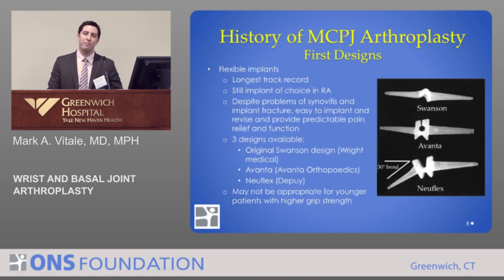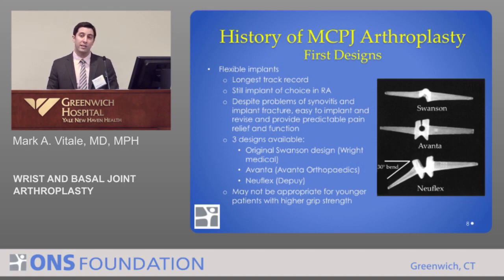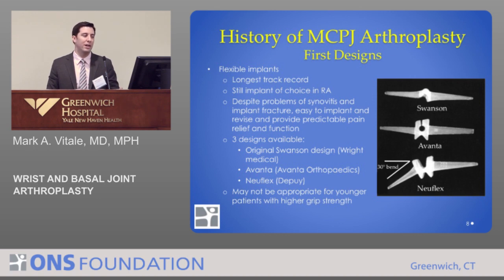Today, there are three main silicone implant designs: the Swanson design, which has been around the longest, the Avanta design, and the Nuflex design, all with different benefits and drawbacks. The Swanson design is still a good option in patients with rheumatoid arthritis and one of the implants of choice. Synovitis and implant fracture, although they sound bad, are easily revised and treated, and this implant provides predictable pain relief and good function.